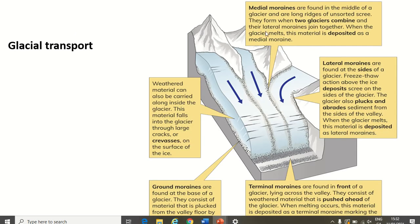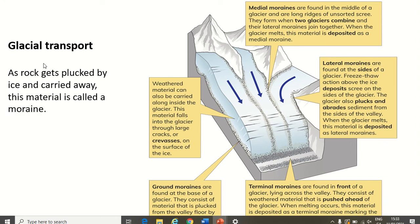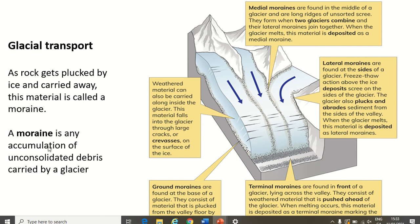A new word here: a moraine. That is essentially how a glacier transports its load — it transports it in a moraine. As rock gets plucked by ice and carried away, the material is called a moraine. A moraine is any accumulation — buildup — of unconsolidated debris carried by a glacier, and moraines are formed in ridges. Unconsolidated debris is a fancy term for bits of loose rock, and these get transported in moraines — literally a ridge of bits of rock carried by the glacier. There are four main types of moraine we must know.